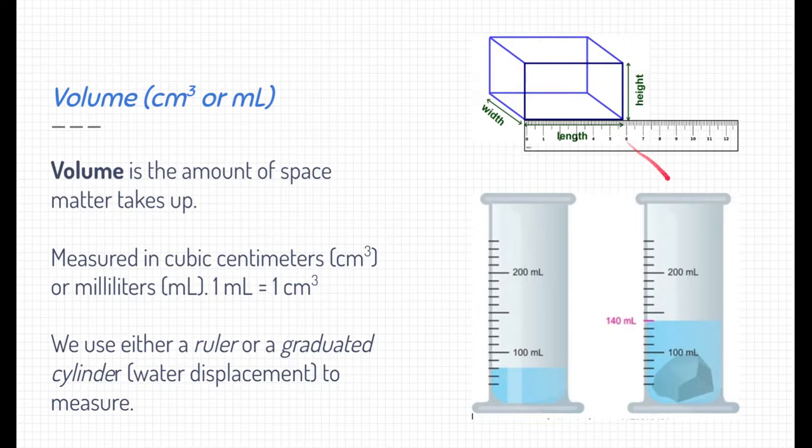Or, if we use a graduated cylinder, we're probably using that because the object is irregularly shaped, like this rock here. To use a graduated cylinder, we typically put a small amount of liquid inside of it, and then put our irregularly shaped object inside the liquid, and see how much the liquid has changed. That is the volume of that irregularly shaped object.